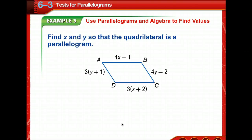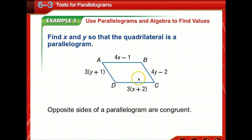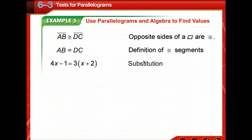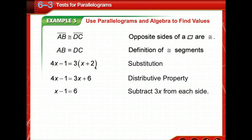You can also use the conditions of parallelograms along with algebra to find missing values that make a quadrilateral a parallelogram. Now we're to find X and Y so that the quadrilateral is a parallelogram. We know that opposite sides are congruent, so we're simply going to set them equal to each other. By substitution, we're going to use the distributive property, multiply the 3 across the parentheses. Subtract 3X from both sides, add 1 to each side, so X is 7.